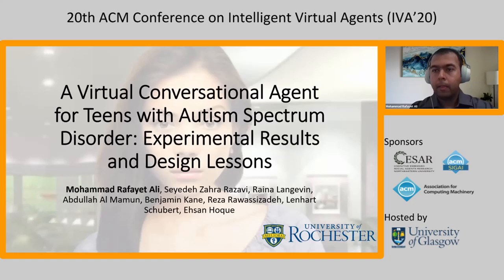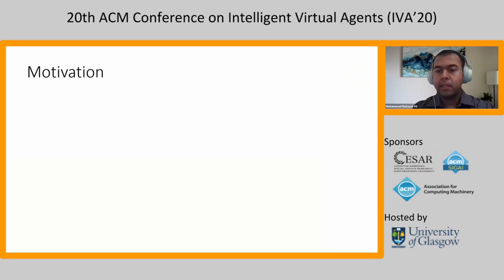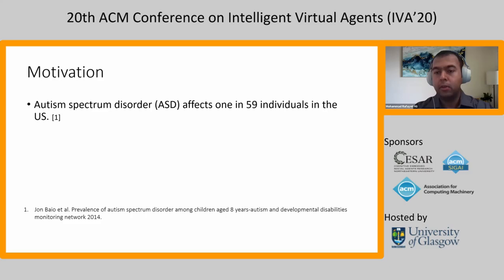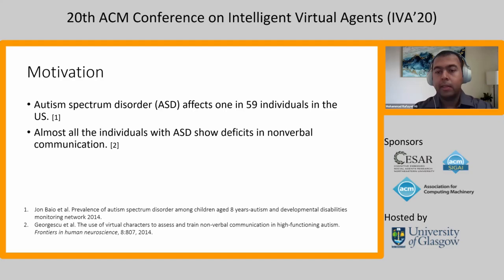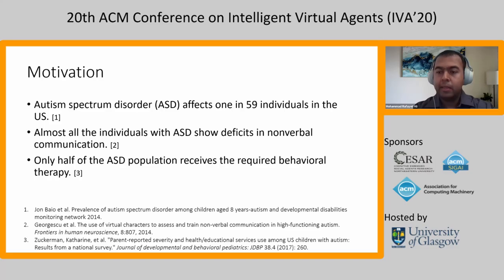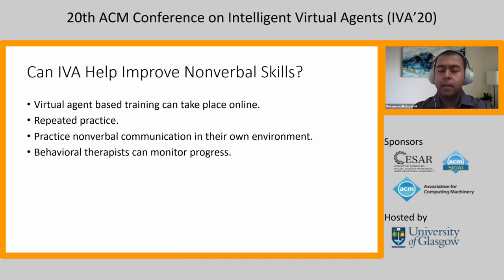Thank you everyone for joining today. The autism spectrum disorder, also known as ASD, affects 1 in 59 individuals in the U.S. alone. Almost all individuals with ASD show deficits in nonverbal communication. The problem is only half of the ASD population receives their required behavioral therapy. Due to this COVID lockdown, the situation of in-person therapy is even worse.